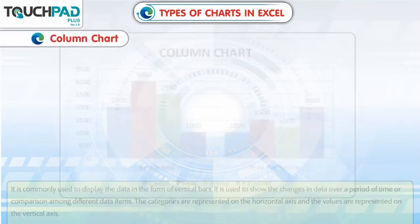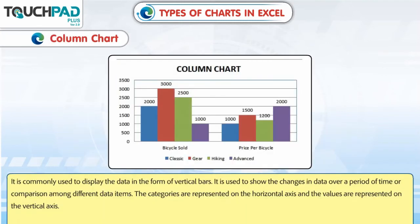Column chart: It is commonly used to display data in the form of vertical bars. It is used to show changes in data over a period of time or comparison among different data items. The categories are represented on the horizontal axis and the values are represented on the vertical axis.